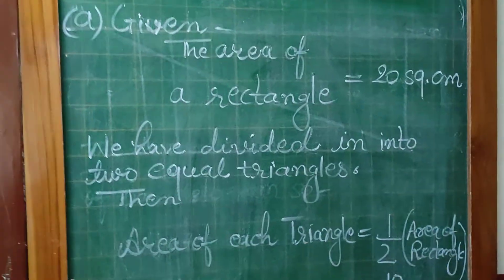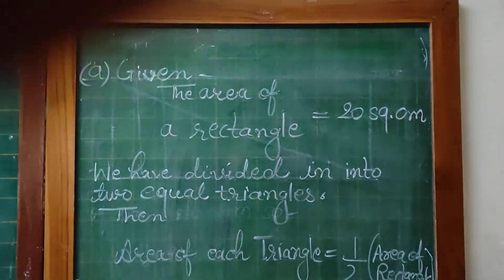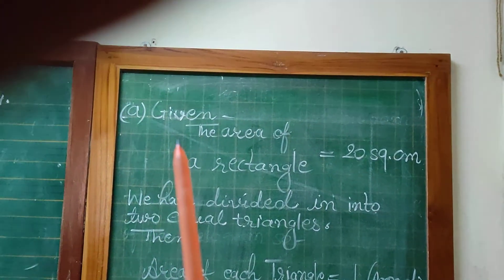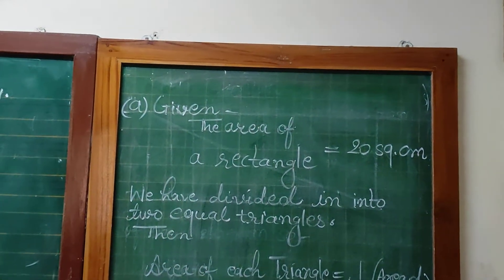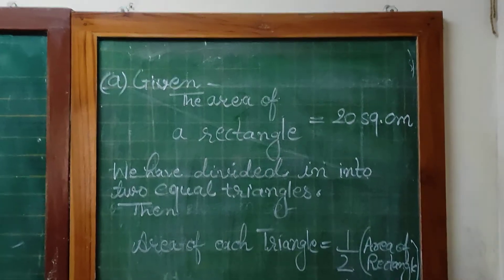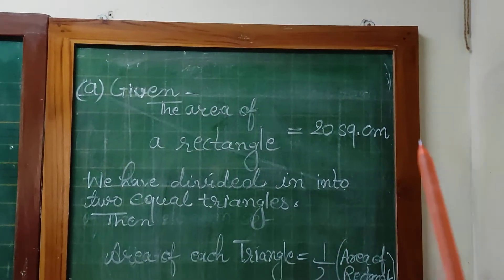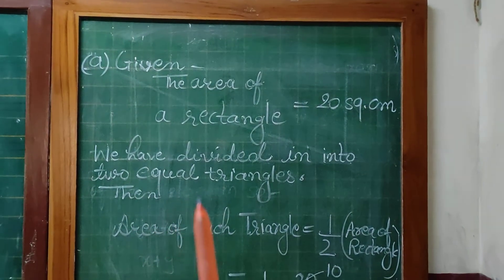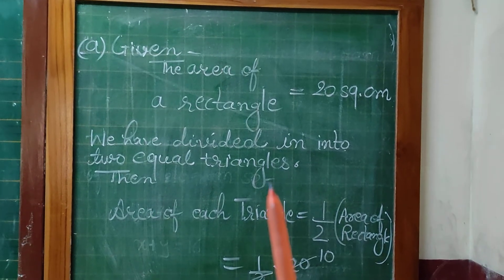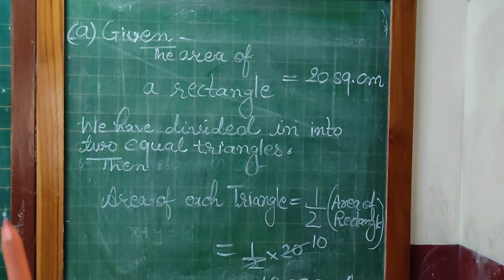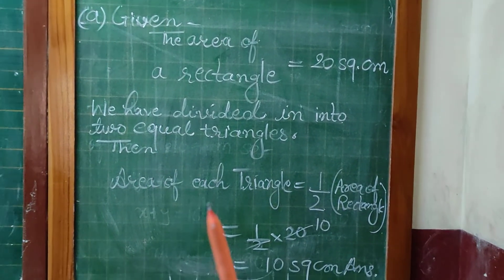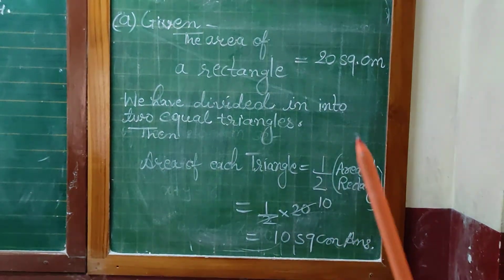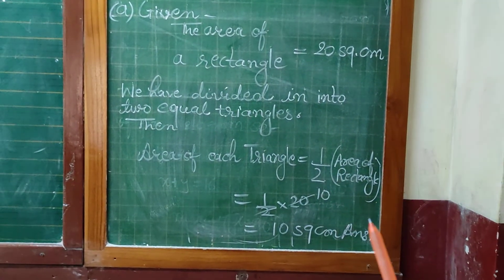See here what you will write first. Given: the area of a rectangle is equal to 20 square centimeters. We have divided it into 2 equal triangles. You can see in the figure A. Then area of each triangle is equal to half into area of rectangle.